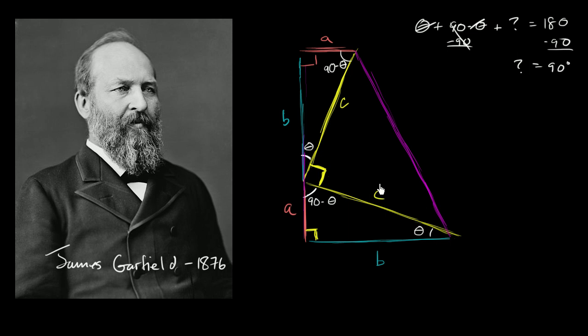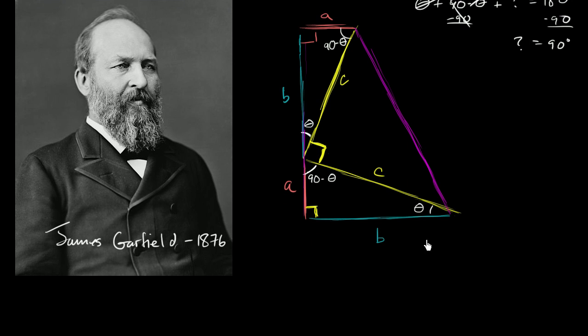There's a couple of ways to think about the area of this trapezoid. One is we could just think of it as a trapezoid and come up with its area, and then we could think about it as the sum of the areas of its components. So let's first think of it as a trapezoid. The area of a trapezoid is going to be the height of the trapezoid, which is a plus b, times the average of the top and the bottom. So 1/2 times (a + b) times (a + b). You're taking the height times the average of this bottom and the top.